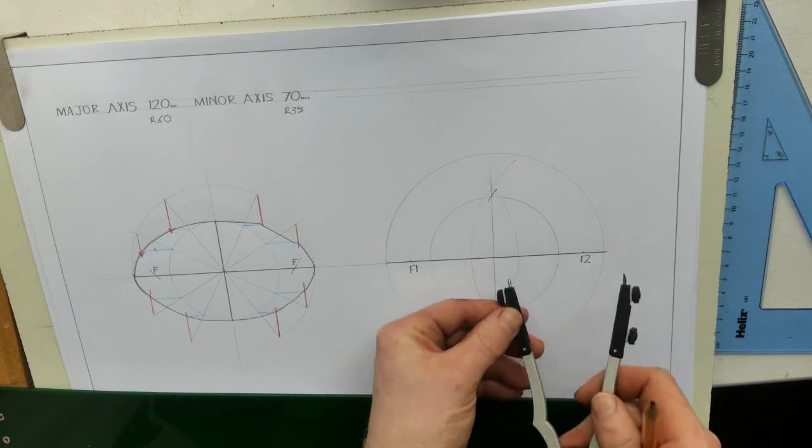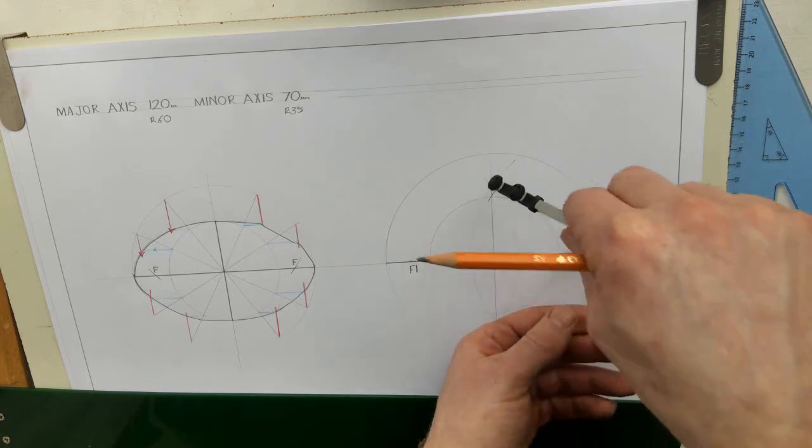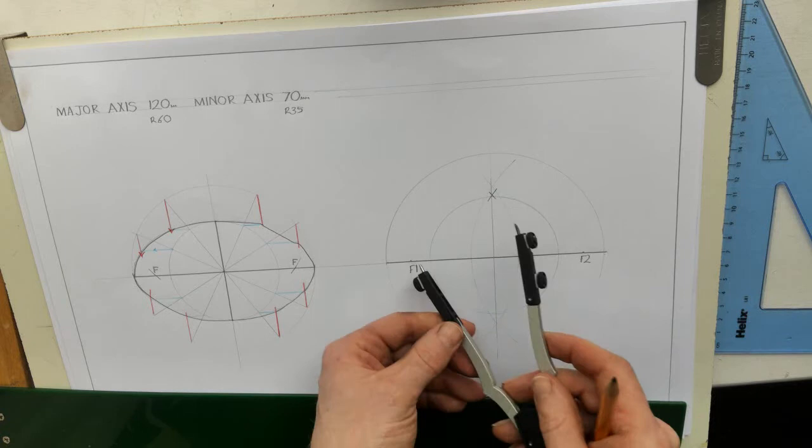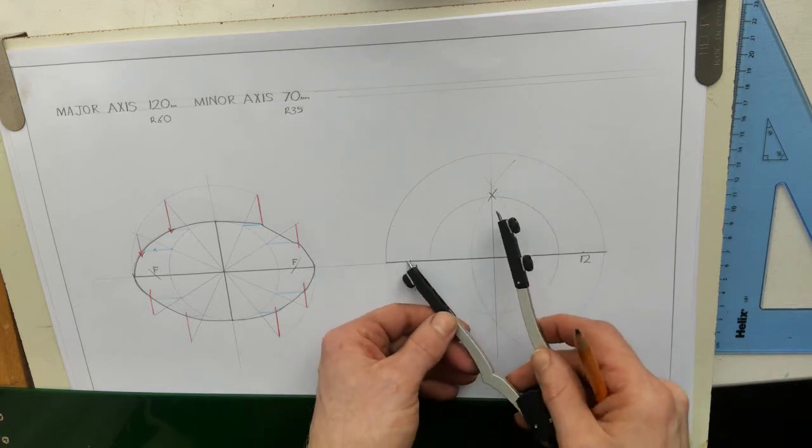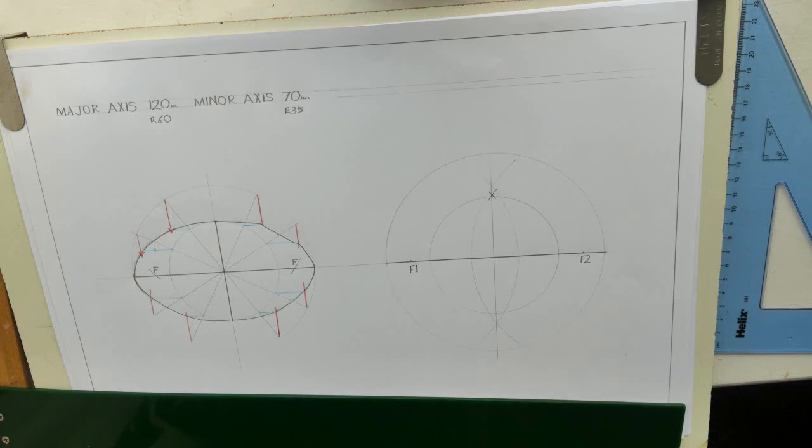So just to recap on that one. Half the major circle here, half the major circle here. Put it on the focal point. If I put it on this one, I'd get the same point, or I should get the same point. So half the major, put it on the focal. Swing till it meets your central line here. So that's that one.